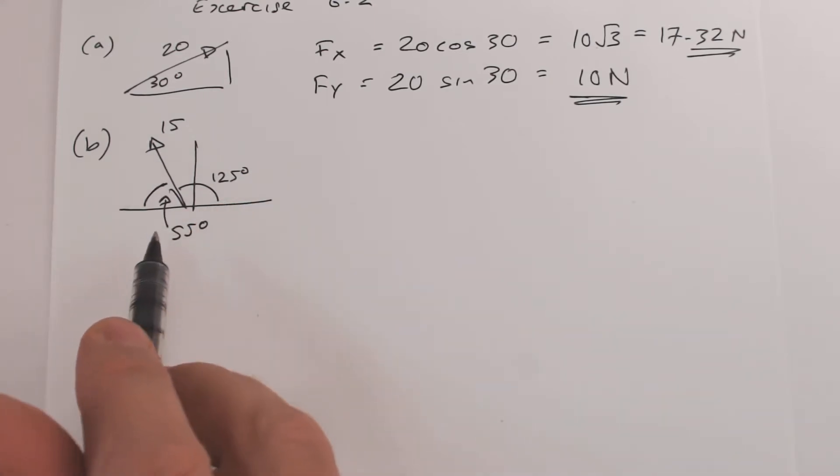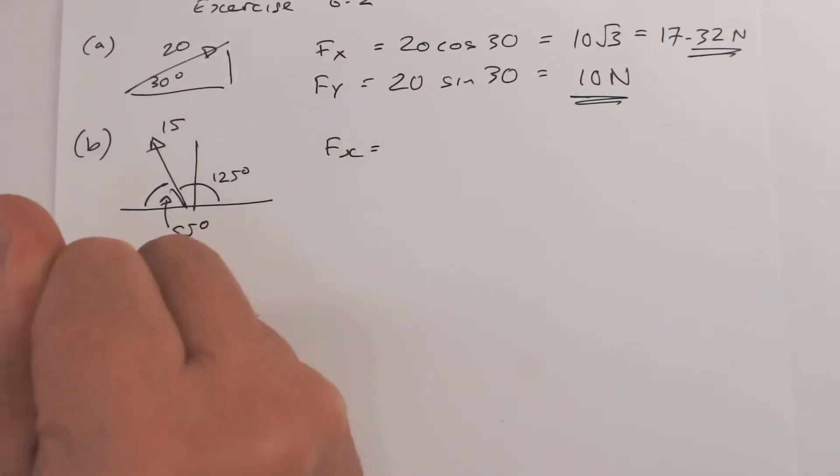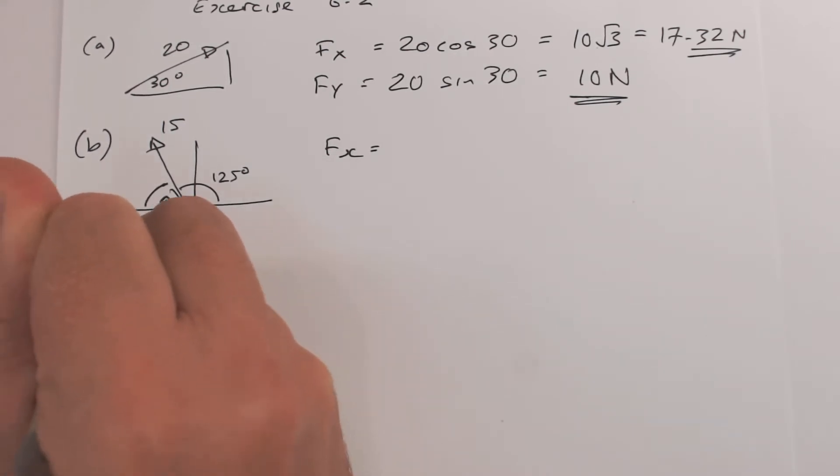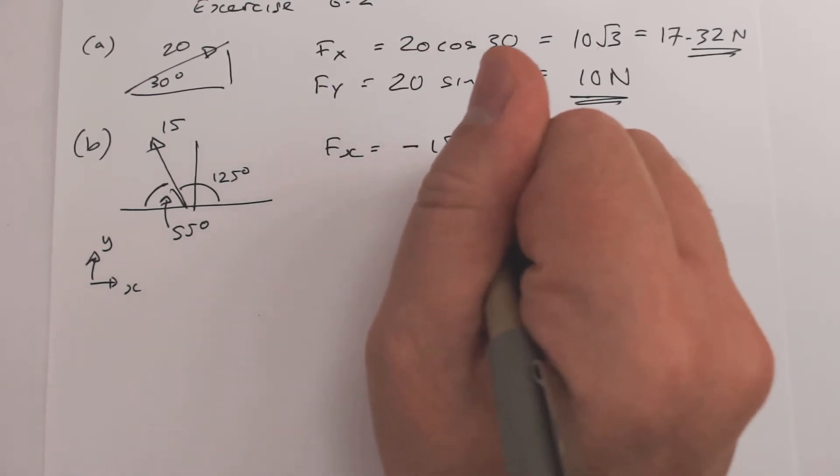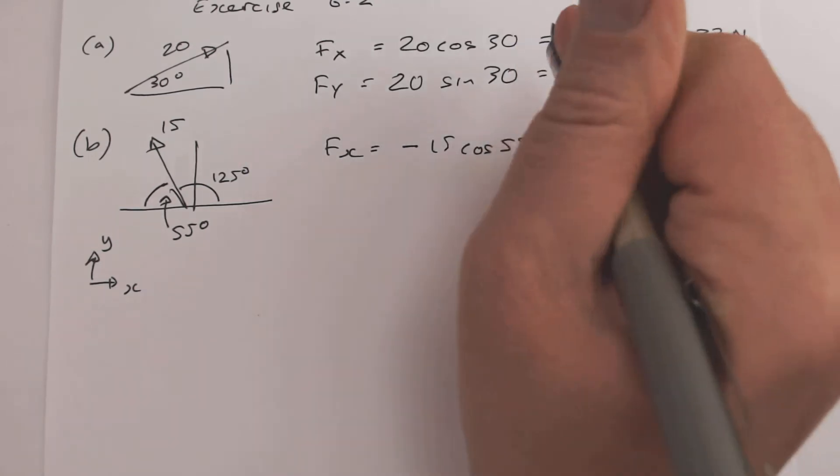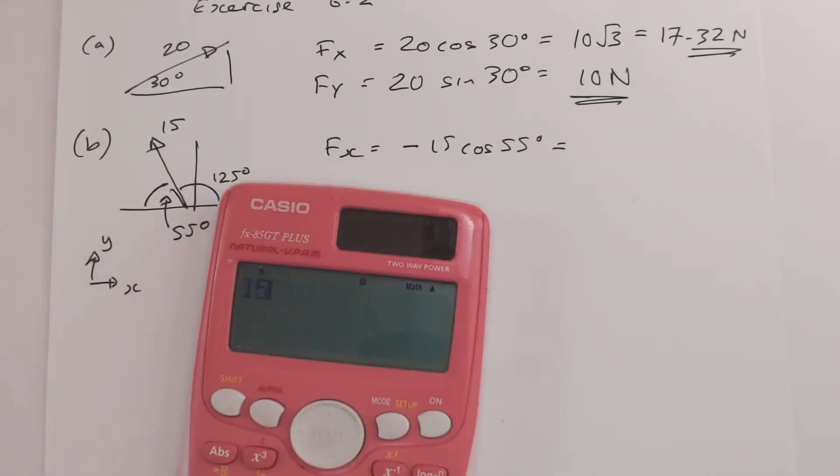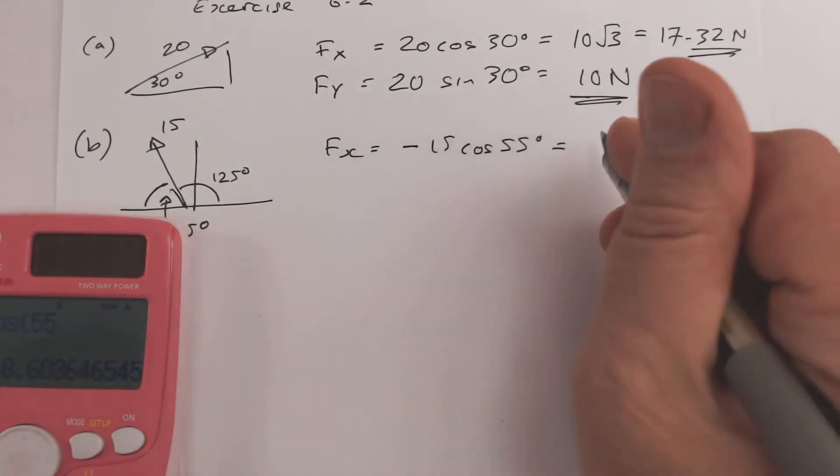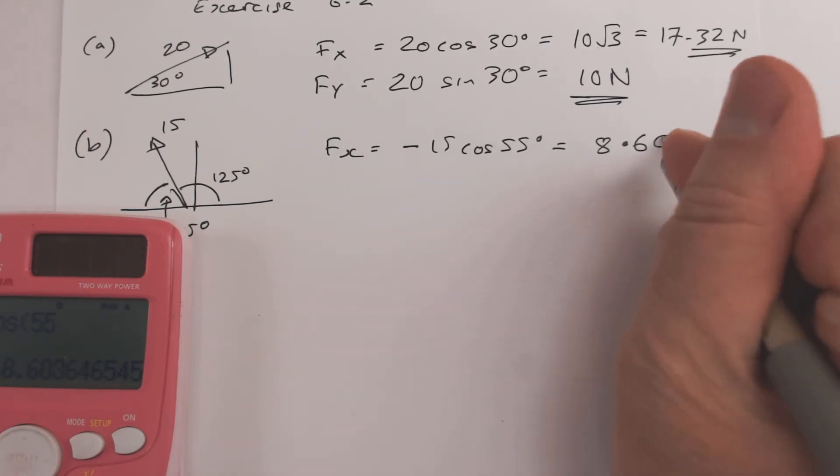So first of all, Fx. We define x to be going positive that way, y to be positive that way, so we'll take that to be negative. So it's minus 15 cos 55 degrees, so that equals minus 8.60 newtons.